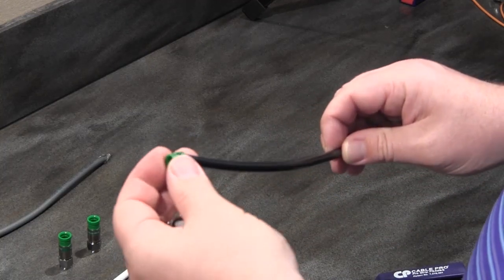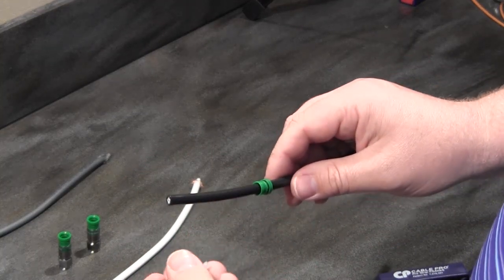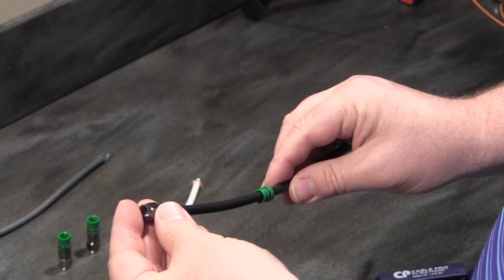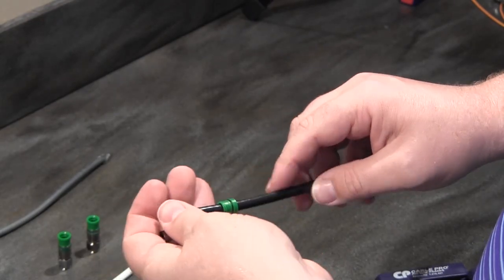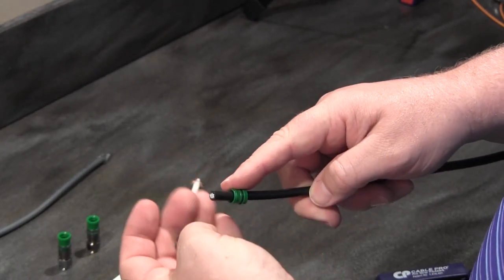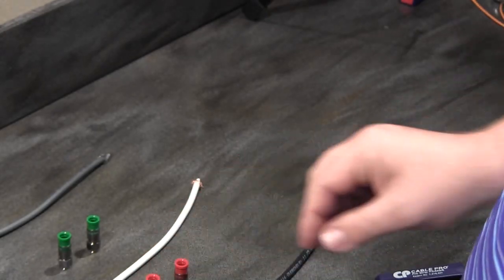But also some installers are in the habit of sliding the compression sleeve onto the cable before they insert the cable into the connector and then compressing the sleeve onto the connector afterwards. So that can be accomplished, but it's not completely necessary.